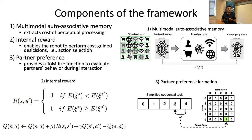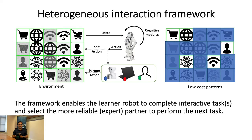The last component is a partner preference formation module, which provides a refine-like functionality for the agent. With this module, the robot can infer what kind of strategy an interaction partner is following and try to avoid unreliable partners during experiments. Together, these components allow the robot to integrate multimodal information, achieve heterogeneous interaction, and solve maze or game-like problems.